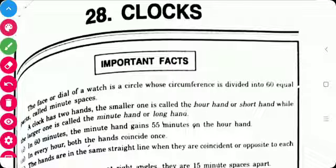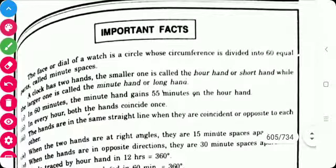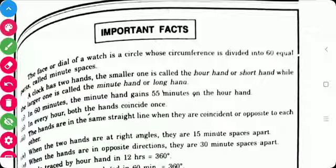First of all, we will see important facts. The face or dial of a watch is a circle whose circumference is divided into 60 equal parts, that is called as the minute spaces.